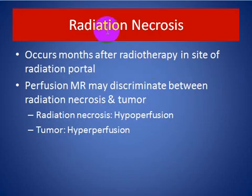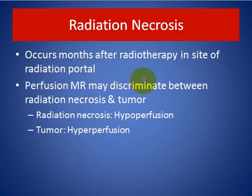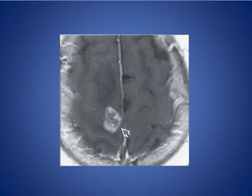Radiation necrosis: appears months after radiotherapy and occurs at the site of the radiation portal. Perfusion MRI may discriminate between radiation necrosis and tumor — radiation necrosis shows hypoperfusion, while tumor shows hyperperfusion.